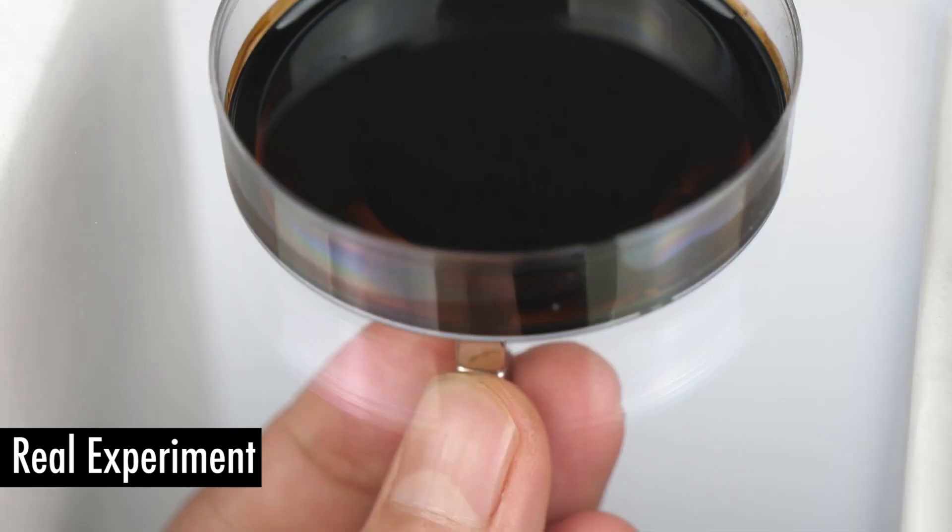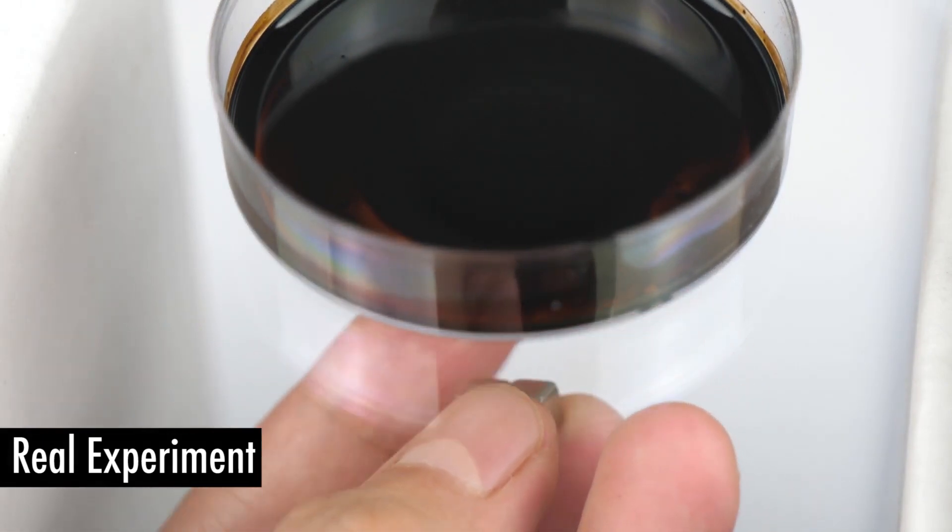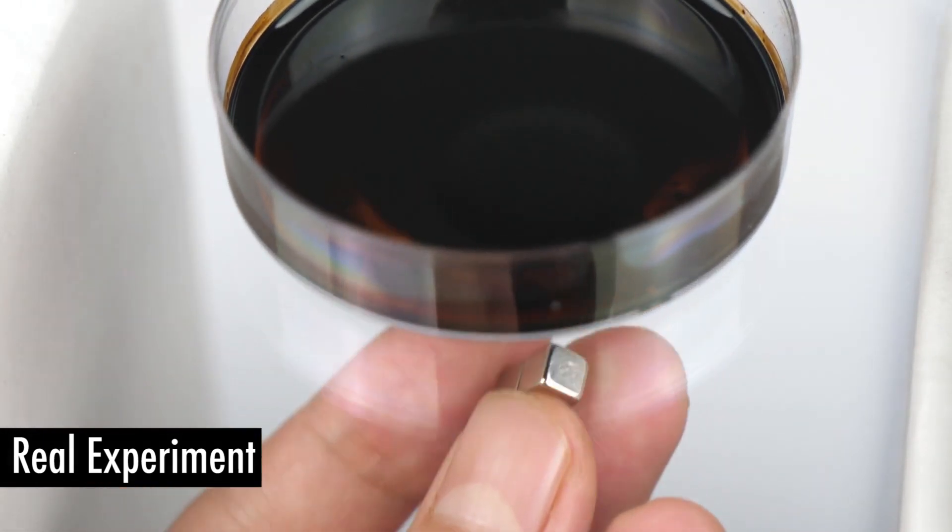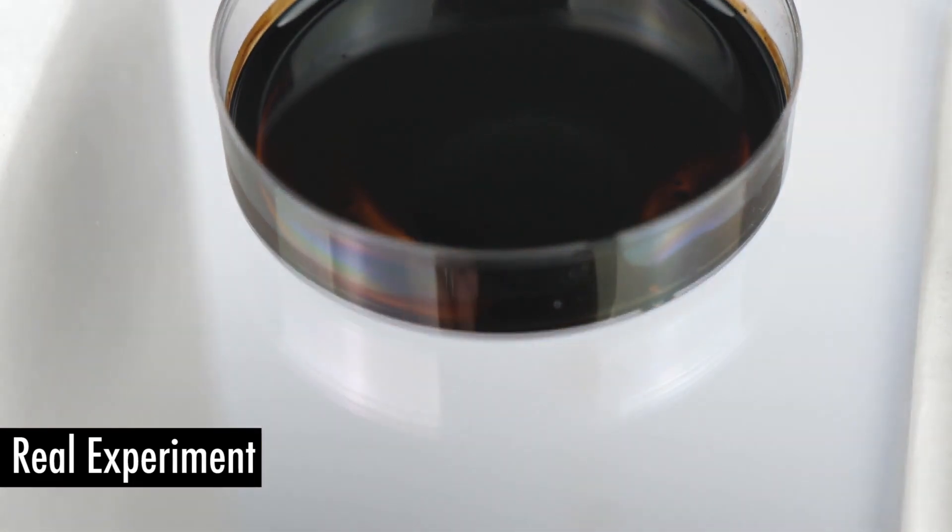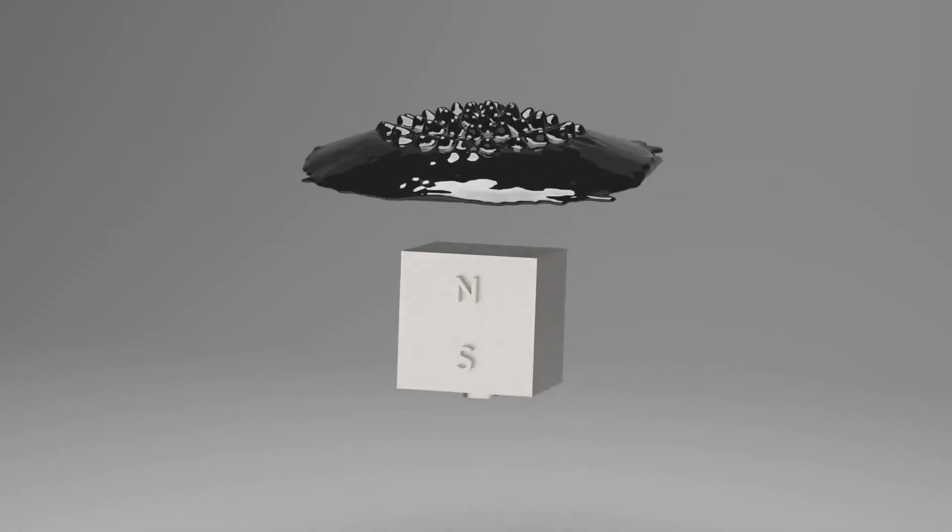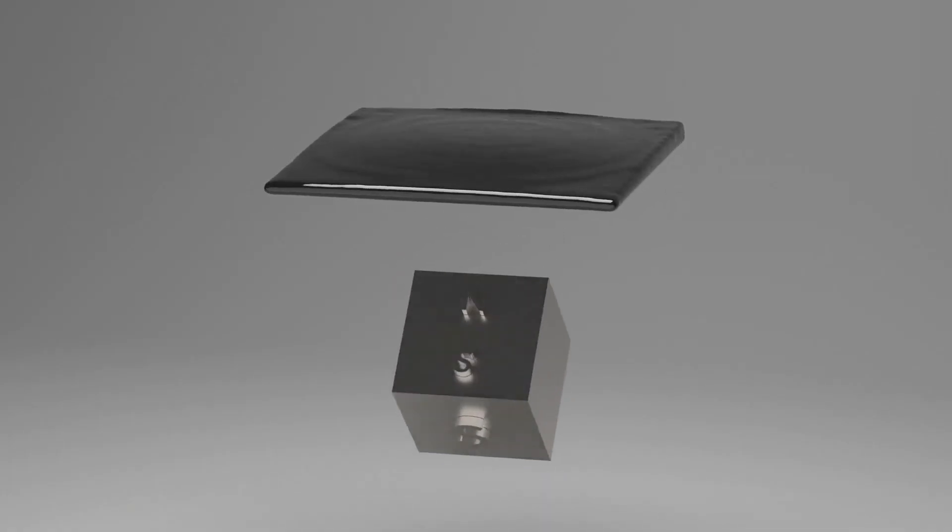In another real experiment, we rotate the magnet as shown here to illustrate the importance of the orientation of the field lines in order to form the characteristic spikes. Our simulation reproduces the same expected phenomenon.